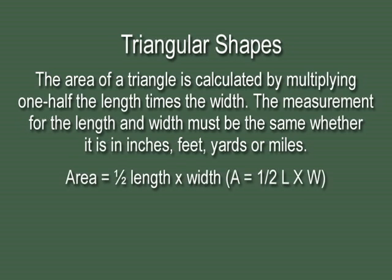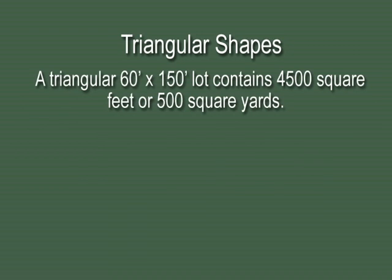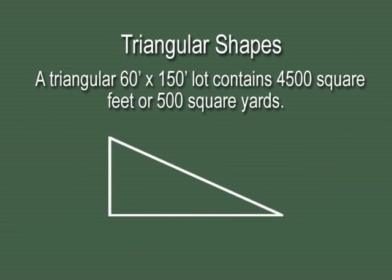The formula for that is area equals one-half length times width, or A equals one-half L times W. If we take a triangular lot which is 60 by 150,